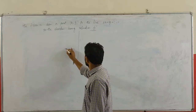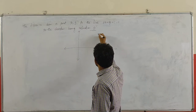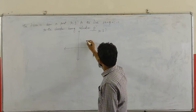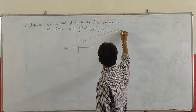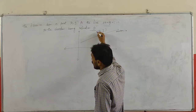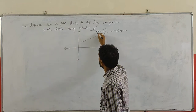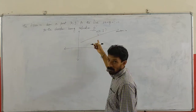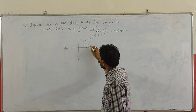Let us set up the coordinate axis. Take the point P(x1, y1) here, and this is the straight line Ax + By + C = 0. We have to find the distance from this point to this line in the direction having inclination theta — he is asking in this direction, so it is theta.